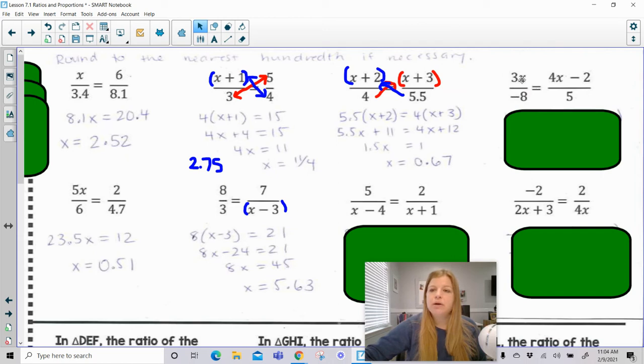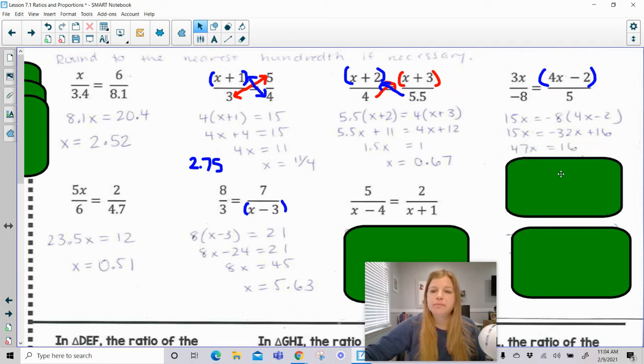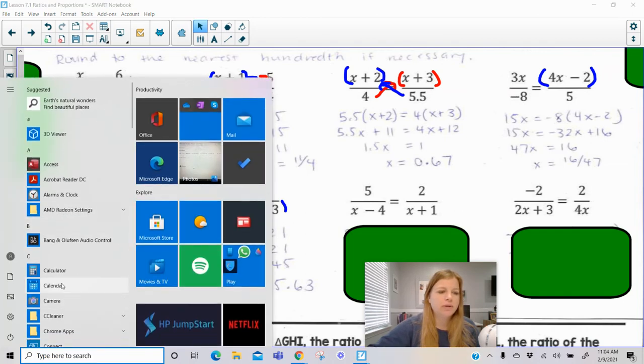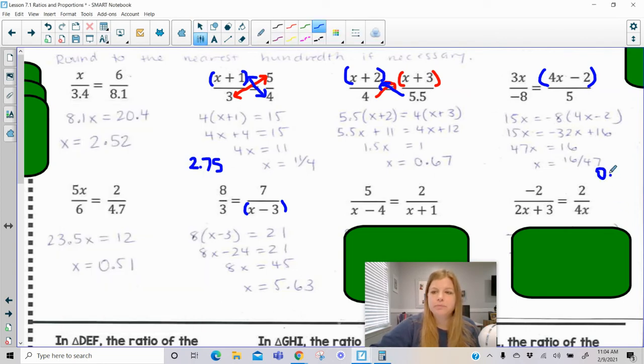How about this next one to the right? 3x times 5 is 15x, and then negative 8 times 4x minus 2. So now this looks like 15x equals negative 8 times 4x minus 2. Distribute the negative 8, add 32x, divide by 47, and we get 16 over 47. If I want my decimal equivalent, 16 divided by 47, I would call it 0.34.